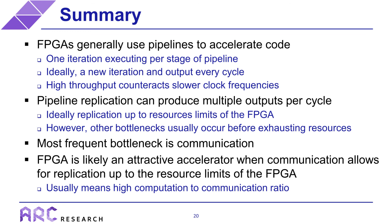To tie this back to the original goal of how to choose an accelerator: an FPGA is likely an attractive option when communication requirements allow for replication up to the resource limits of the FPGA. The simplest thing to look for is a high ratio of computation to communication — the more computation done on each input, the less likely there will be communication bottlenecks. In the next talk, we'll start comparing FPGAs with other acceleration strategies. Thanks for watching.